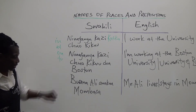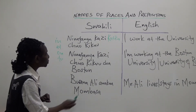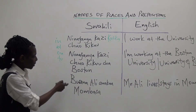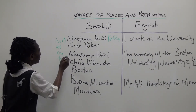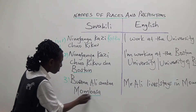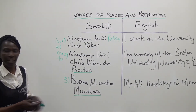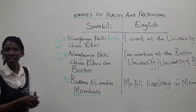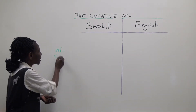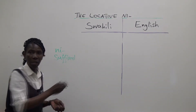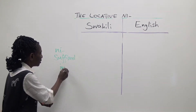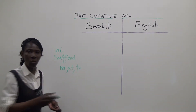So, you notice in the first sentence we have the preposition katika — at the university — whereas in the second and third sentences we have proper names, Boston and Mombasa, and thus we do not use the preposition. In Swahili, the locative -ni is suffixed to nouns to express English prepositionals such as in, at, to, and others.